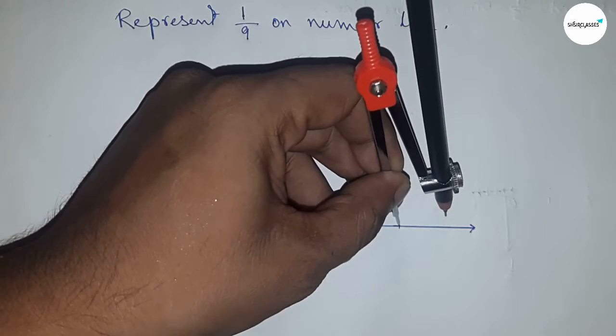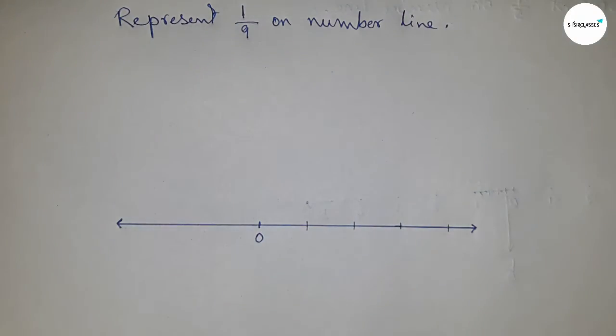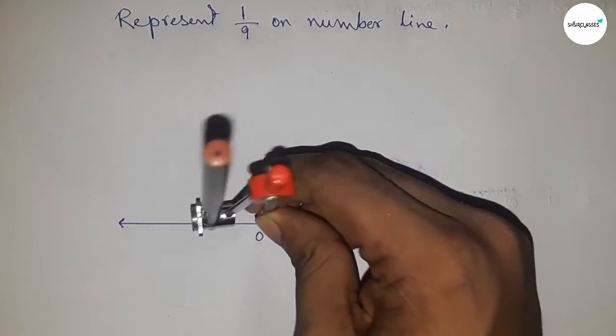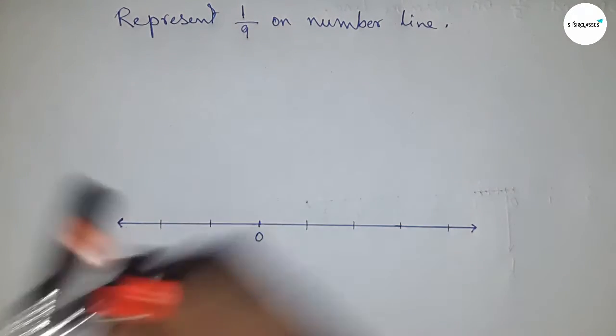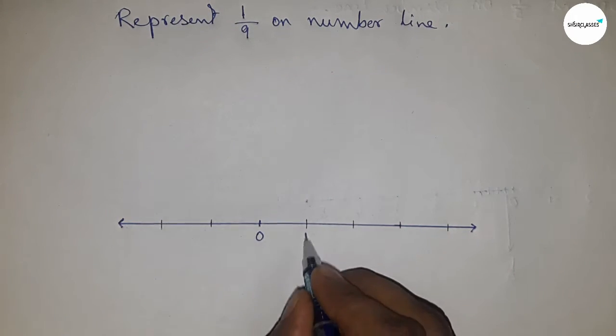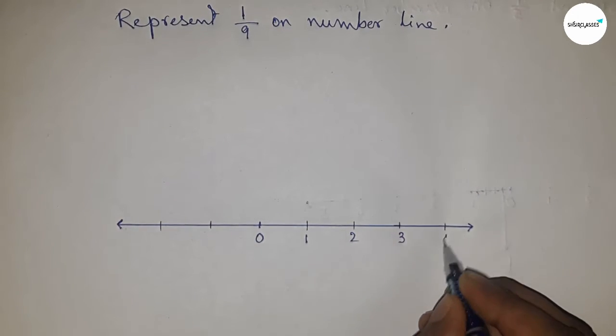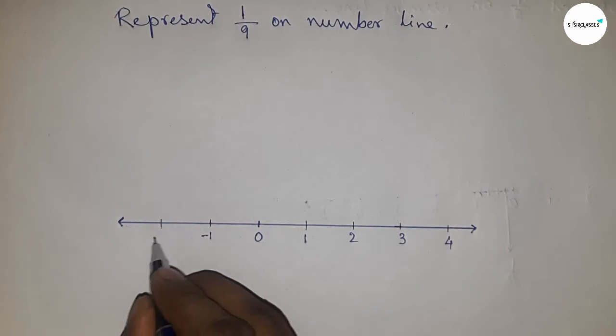Mark the numbers on the line this way. All lengths are equal. This type of length is called unit length, meaning one unit. Now we have one, two, three, four, and so on. On this side, minus one, minus two, and so on.